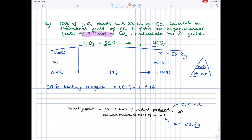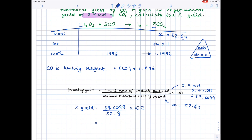To use the percentage yield equation appropriately, note that we have different units: 0.9 moles for the actual yield versus 52.8 grams for the theoretical yield. They must be in the same units. So convert the actual yield: 0.9 moles × 44.011 (Mr of CO₂) = 39.61 grams. Now we can calculate percentage yield: 39.61 ÷ 52.8 × 100, giving a final answer of 75.0% to 3 significant figures.